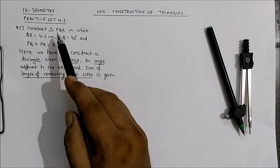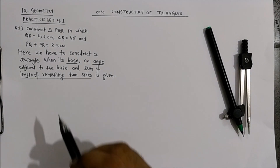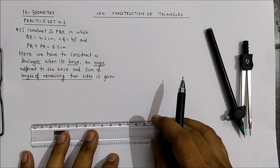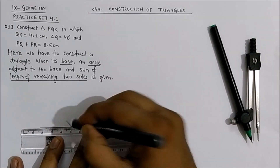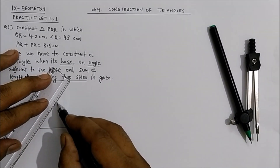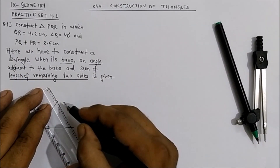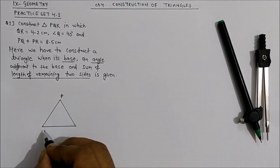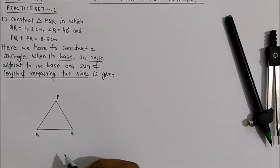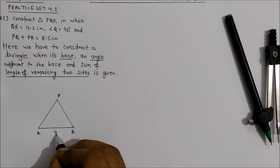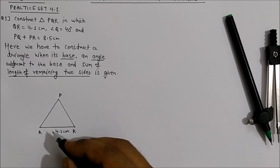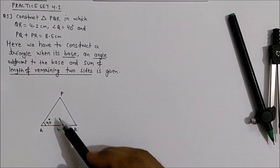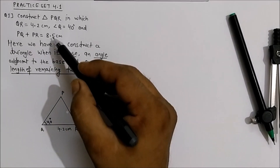Let us first draw the rough figure for this. We have drawn one triangle, named it PQR. QR is given as 4.2 cm, angle Q is given as 40 degrees, and PQ + PR is given as 8.5 cm.